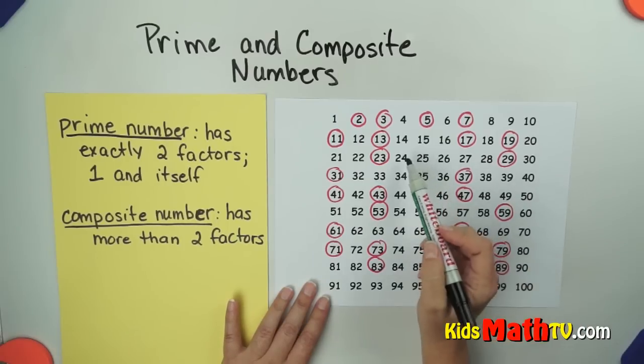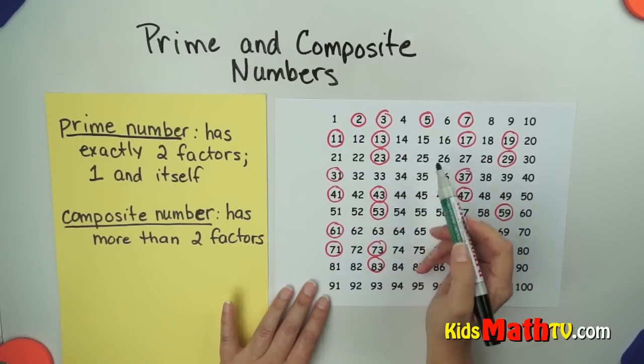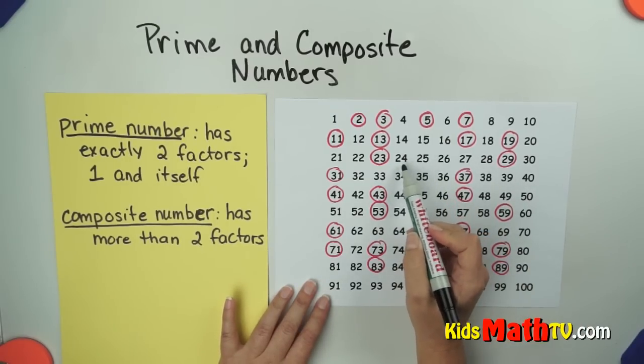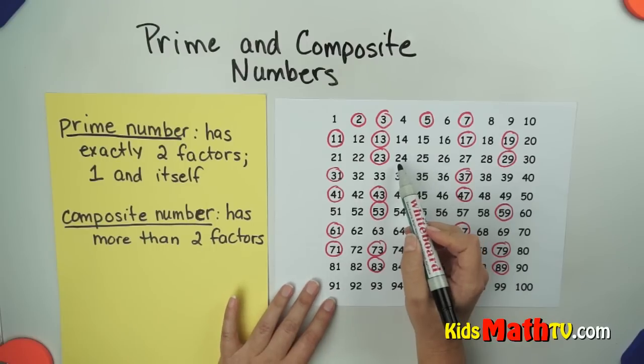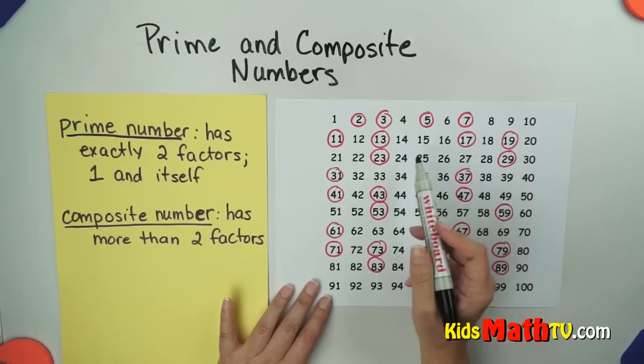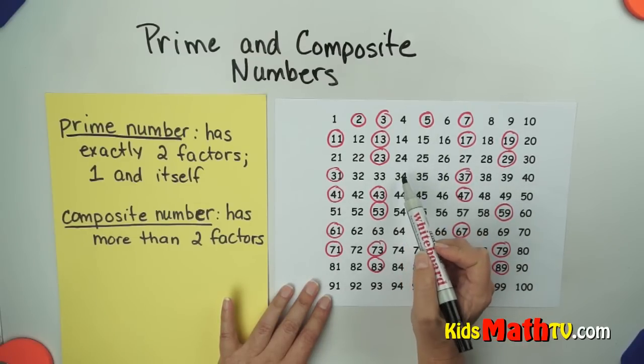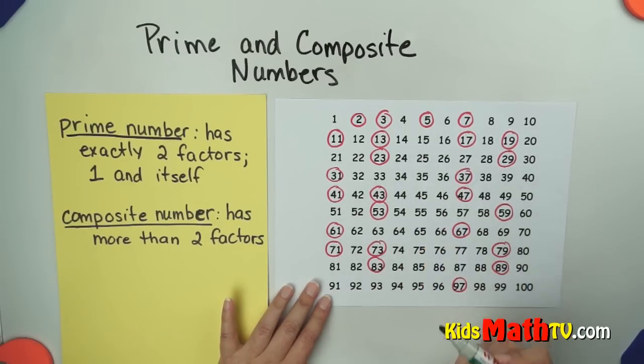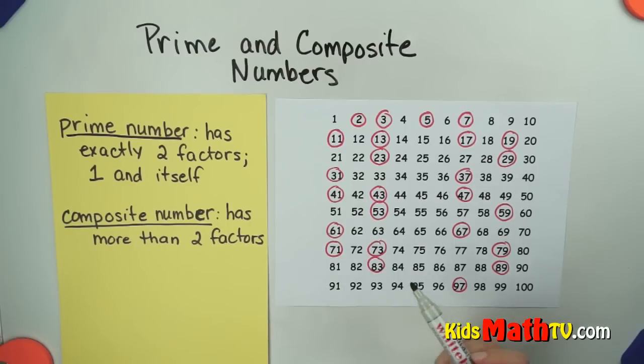In contrast, the other numbers, let's just take 24 for example. 24 is not prime because it has more than two factors. We can multiply one times 24 to get 24, but we can also multiply two times twelve, and three times eight, and even four times six. So it has many more factors than just one and itself.